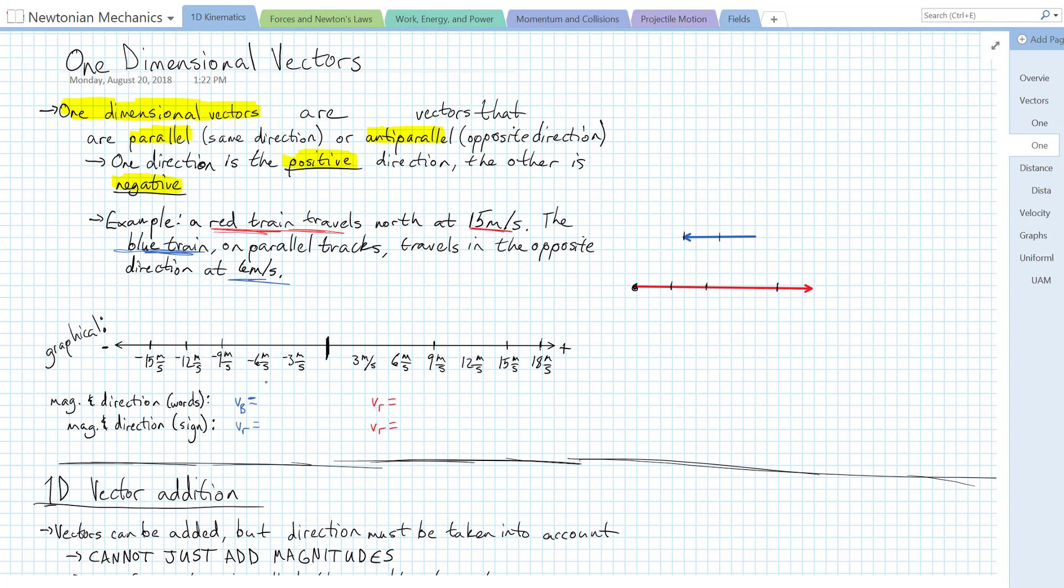So I'm going to say that the north direction is positive. So north is positive, south is negative. And I'm just going to indicate that there so we know which direction is positive and negative.